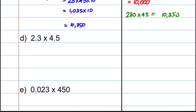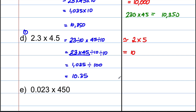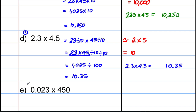Next: 2.3 multiplied by 4.5. This relates to fact one. We can say this equals 23 divided by 10 multiplied by 45 divided by 10. Rearranging gives 23 multiplied by 45 divided by 10 divided by 10, which is 1035 divided by 100, giving the answer 10.35. By estimation, rounding to one significant figure: approximately 2 multiplied by 5 equals 10. So the answer has digits 1035 in it and must be close to 10, giving 10.35.